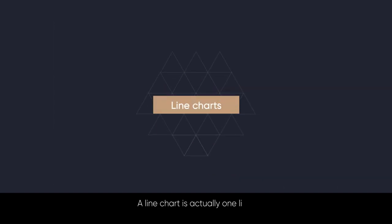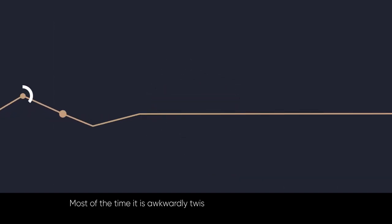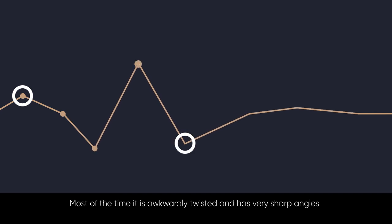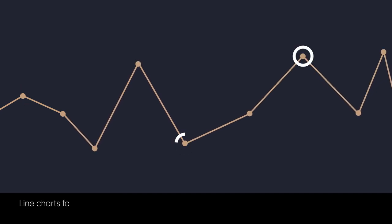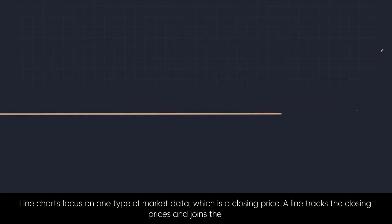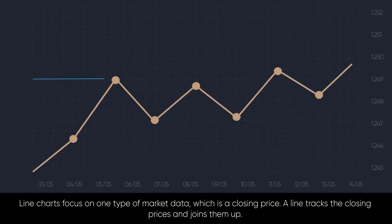A line chart is actually one line. Most of the time it is awkwardly twisted and has very sharp angles. Line charts focus on one type of market data, which is a closing price. A line tracks the closing prices and joins them up.